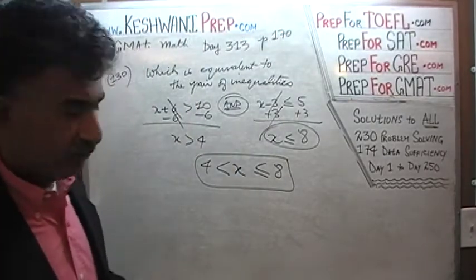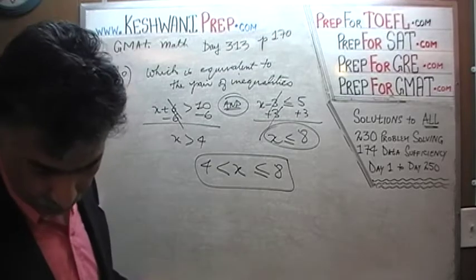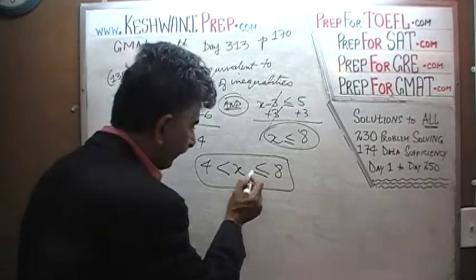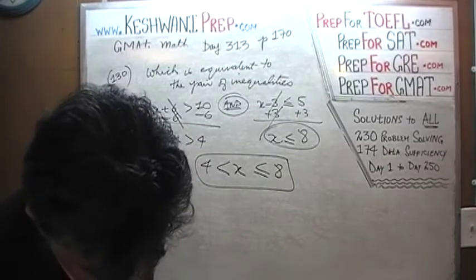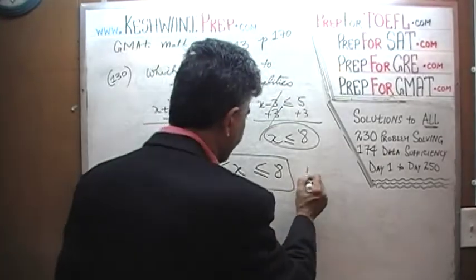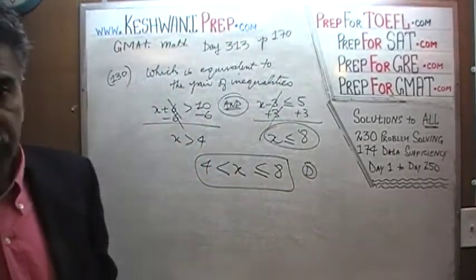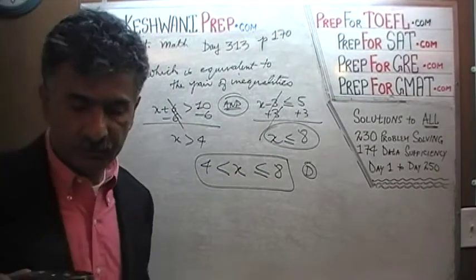Whichever answer choice shows you this part, x falls between 4 and 8, except this end has an equal sign as well. And that's answer choice D. That's it. As I said, it's a pretty straightforward, pretty simple problem.